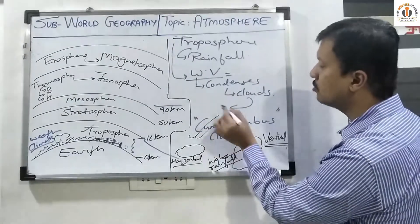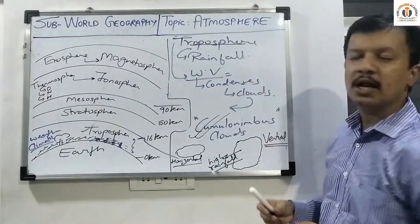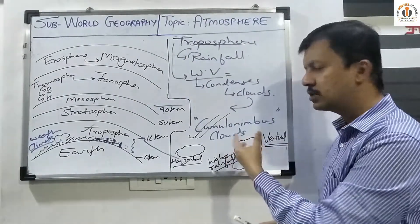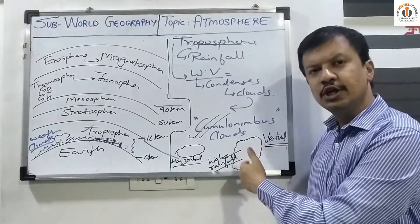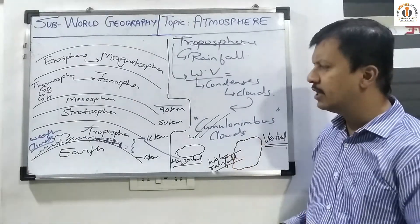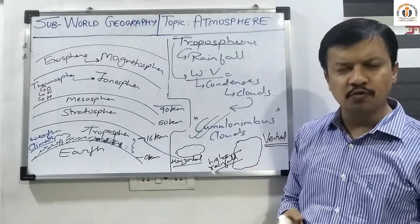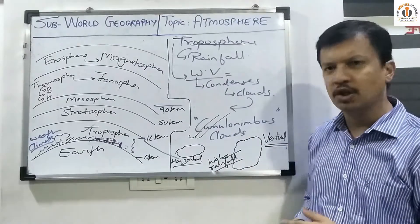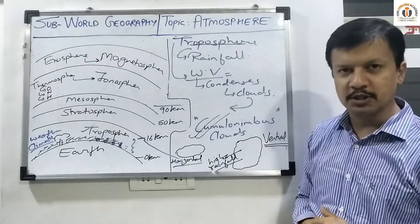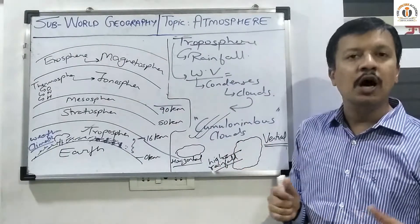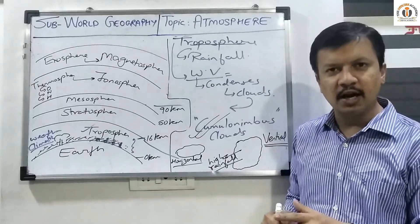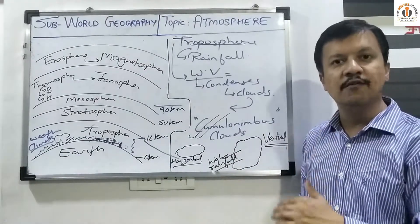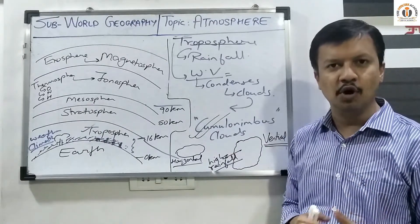Cumulonimbus clouds are found in the troposphere. In the equatorial region, cumulonimbus cloud formation is a daily phenomenon. During the Indian monsoon when the southwest monsoon is approaching, you can also see the formation of vertical cumulonimbus clouds. Vertical cumulonimbus clouds are not a very good sight for aircraft movement, as these clouds decrease visibility and create a lot of air turbulence.